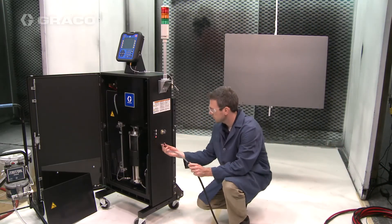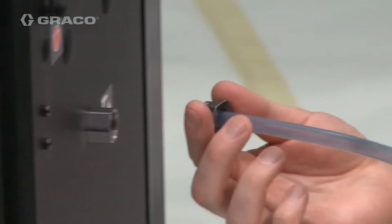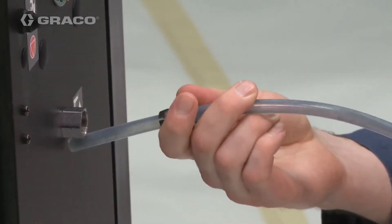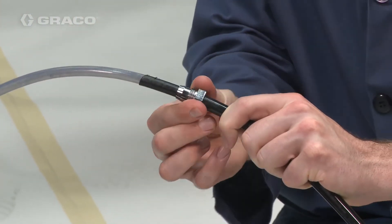Remove the fluid outlet strain relief ferrule from the strain relief housing on the cabinet. Slide the strain relief ferrule over the conductive layer of the hose until it reaches the abrasion layer.